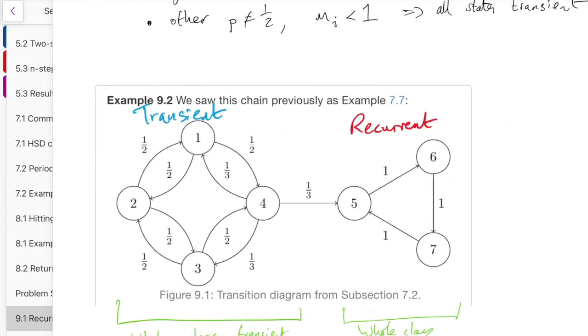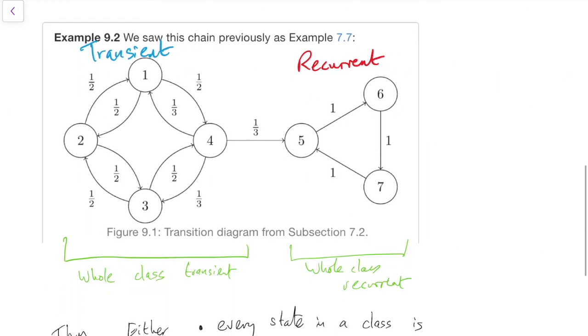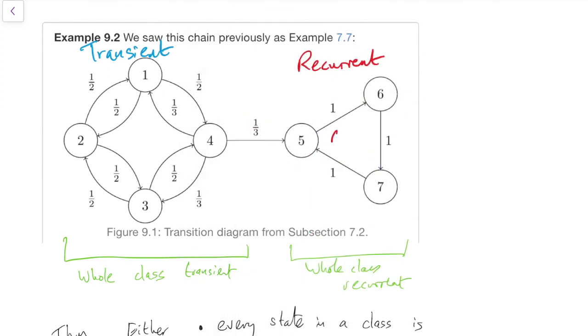Let's go back to an example from the previous subsection, this one here, where we said that we had two communicating classes. Obviously, this communicating class over here is closed, right? Because once we go into it, we can't get out. So we can just say straight away, oh, all those states are recurrent because it's a finite closed class.